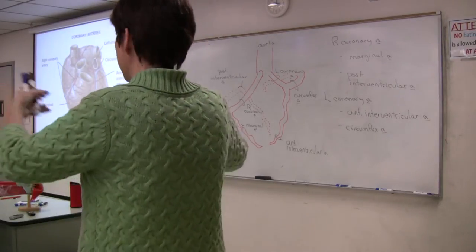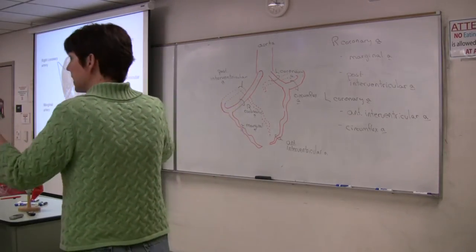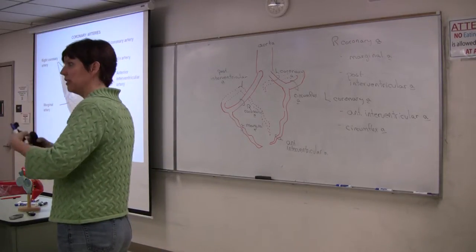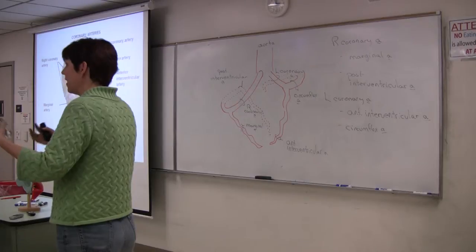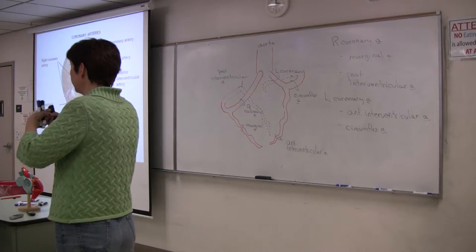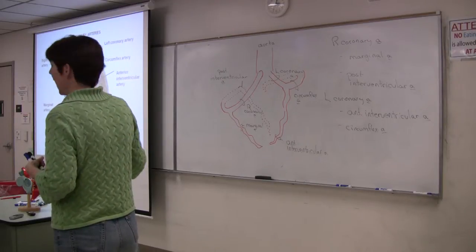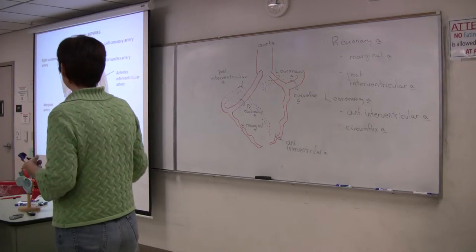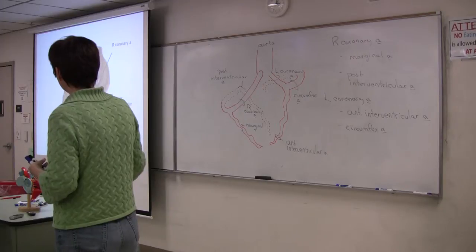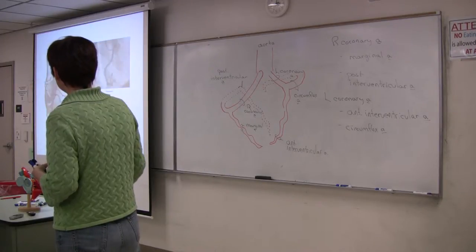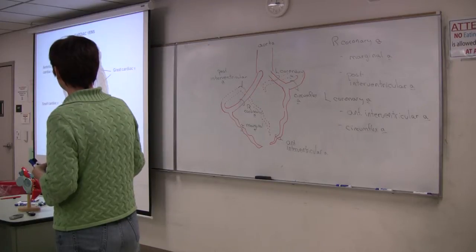So now let's look at the drainage. So these vessels are going to send smaller branches deep into the cardiac muscle. And they're going to form arterioles and then capillaries. And then the capillaries are going to come back together to form venules and veins as they move back up to the surface of the heart where we find the veins.